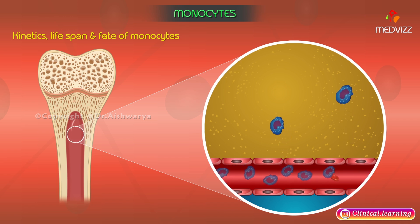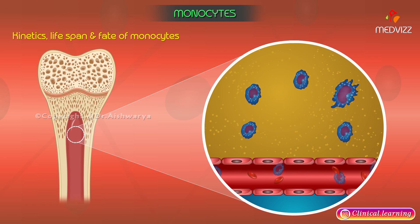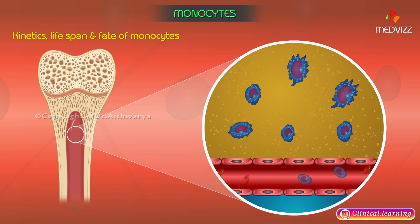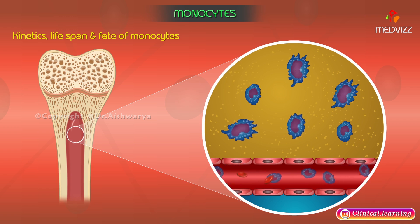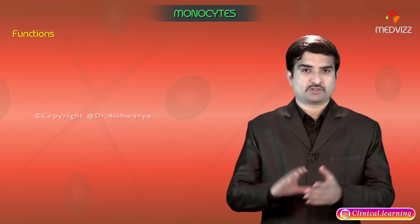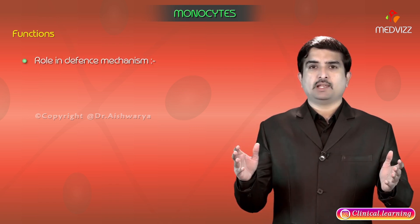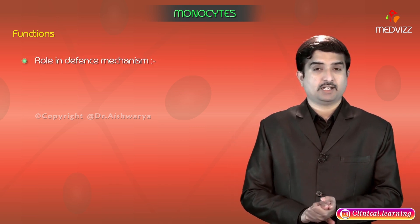In the tissues, monocytes are converted to macrophages, forming part of the so-called tissue macrophage system, also called the reticuloendothelial system. In the tissues, they can live for months or even years unless destroyed while performing a phagocytic function. Monocytes have an important role in the body's defense mechanism.